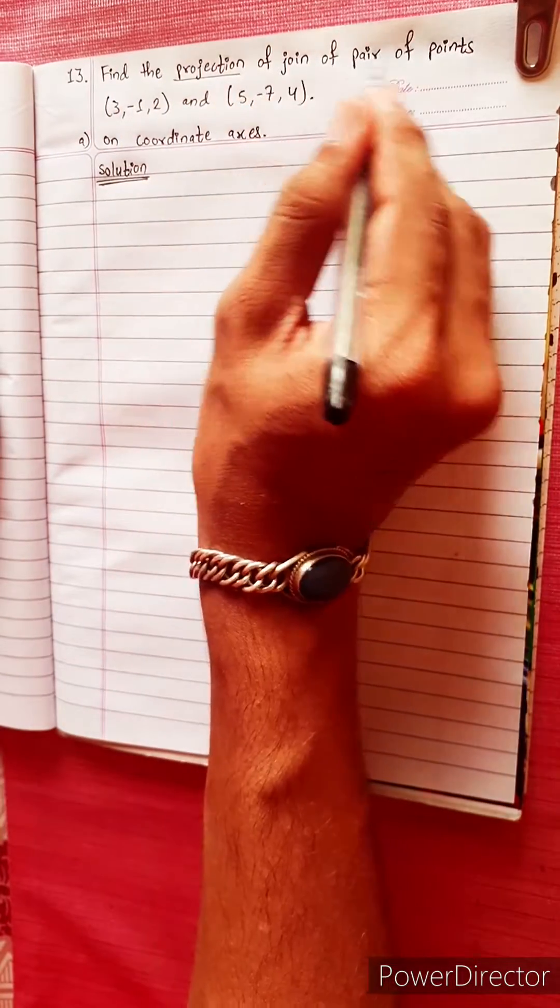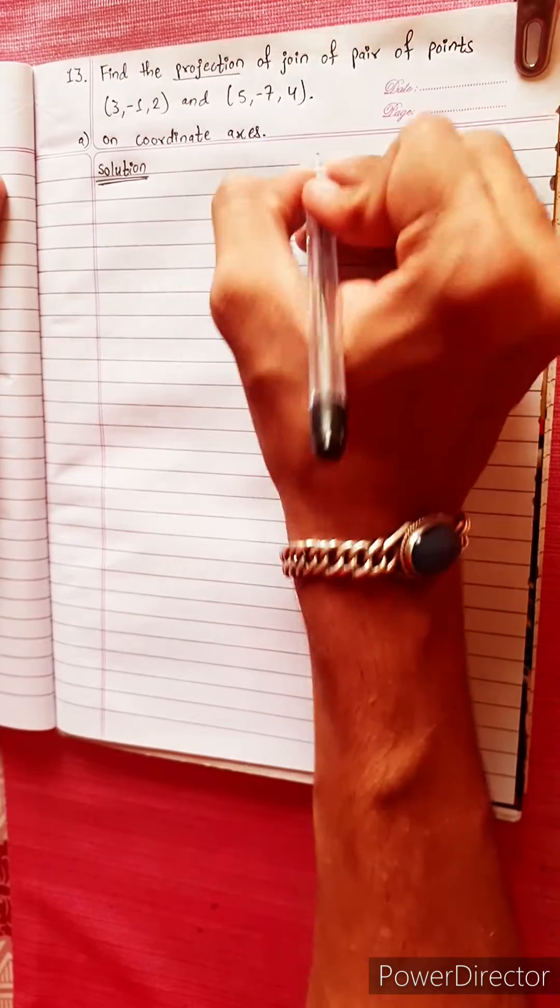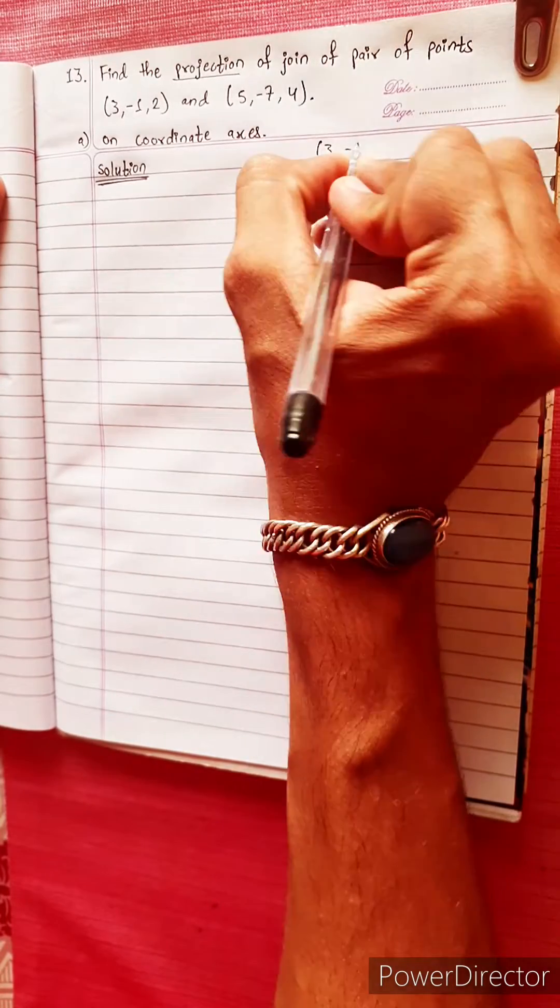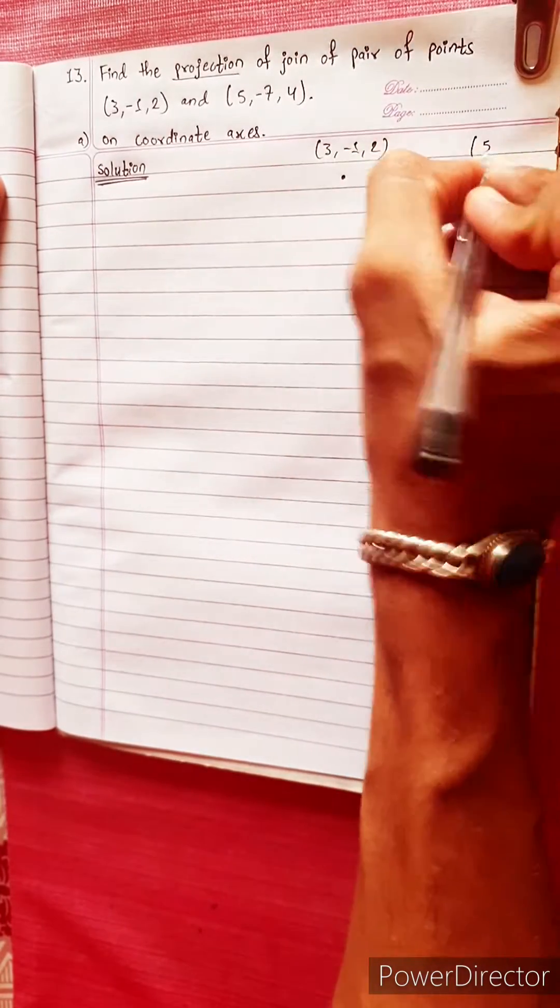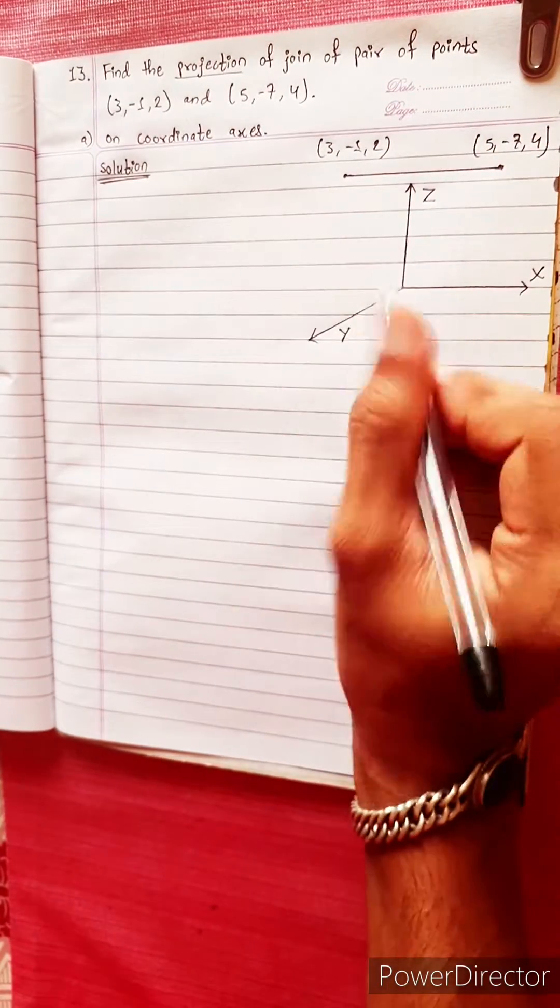Find the projection of the join of the pair of points. The points are (3, -1, 2) and (5, -7, 4). Then x-axis, y-axis, z-axis.